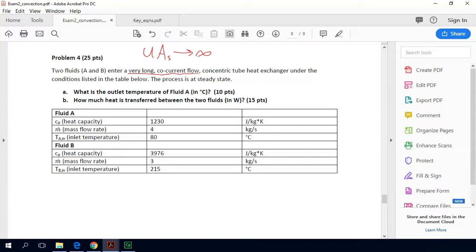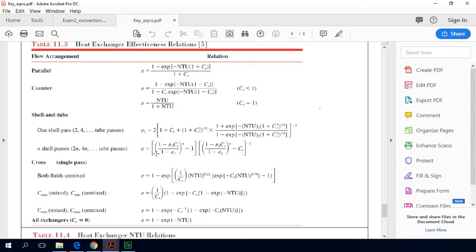So what we can do is we can look up what the effectiveness of this heat exchanger would be in these tables. So the effectiveness is given as a function of the number of transfer units. It's essentially a dimensionless size of the heat exchanger and CR, which is the ratio of the heat capacity rates of our two fluids.